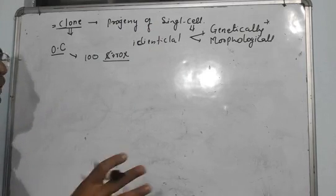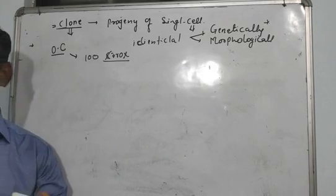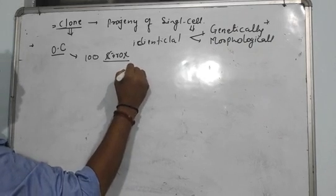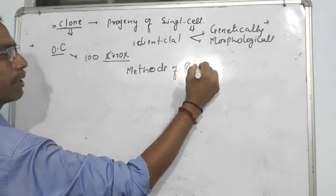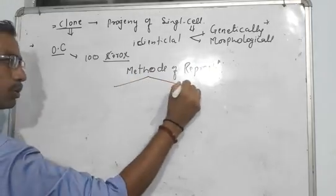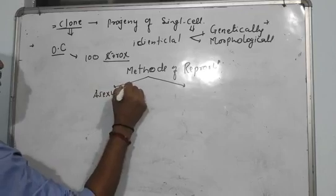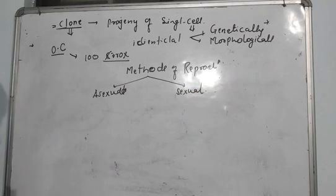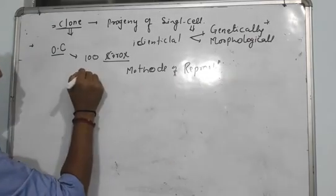Now after this we are going to focus on methods of reproduction. In methods of reproduction, we got two basic types: asexual reproduction and sexual reproduction. Now focus on asexual method of reproduction.